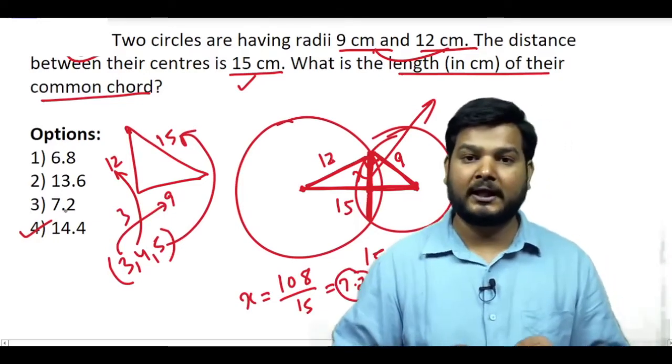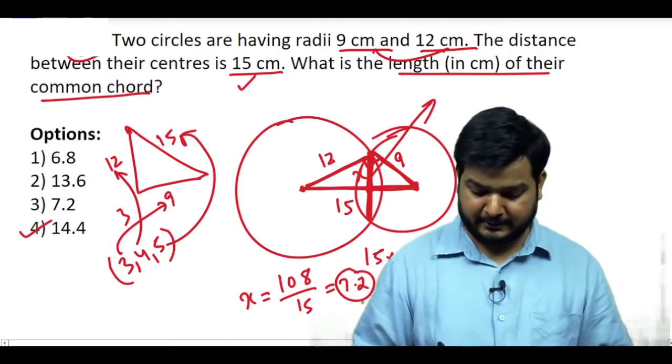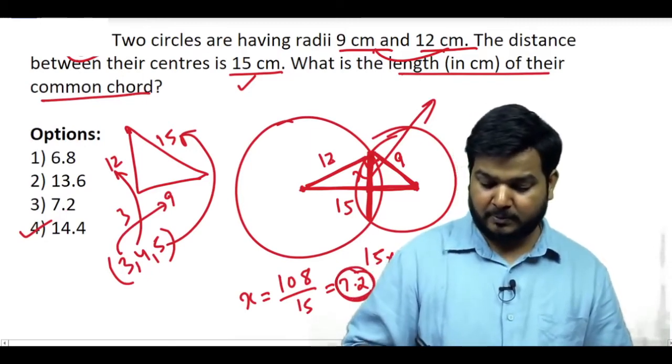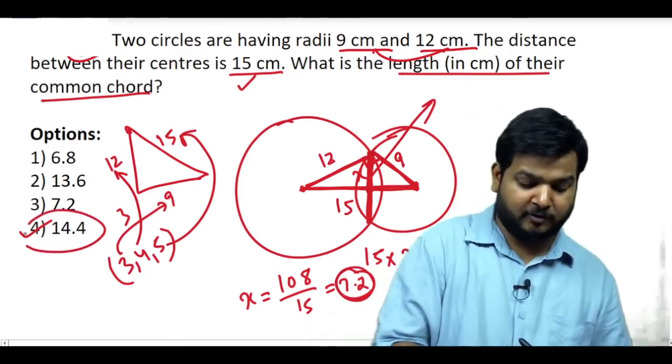You will double the 7.2, so the common chord will come to 14.4.